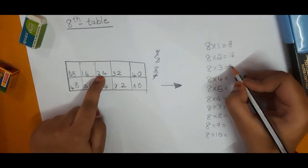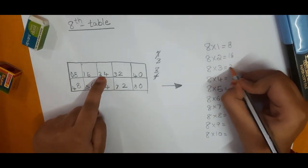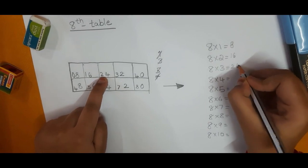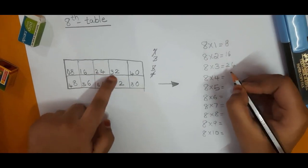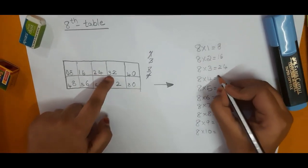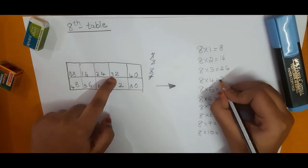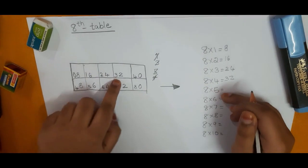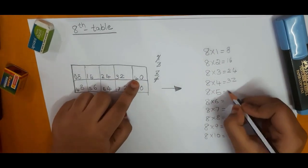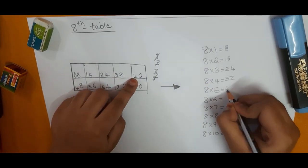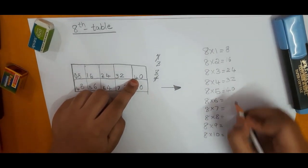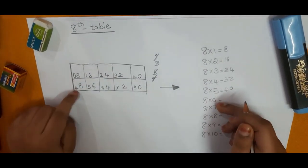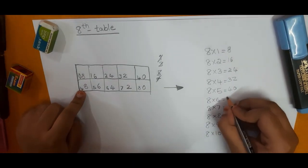Eight, three, zero, twenty-four. Eight, four, zero, thirty-two. Eight, five, zero, forty. Eight, six, zero, forty-eight.